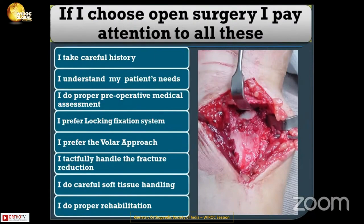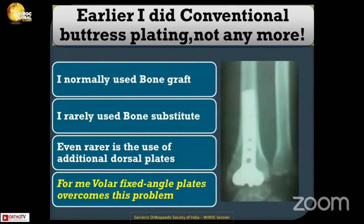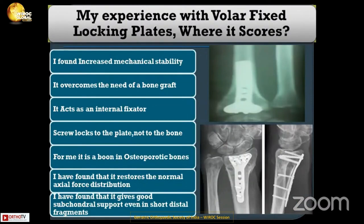When I plan for surgery, I take a careful history, understand my patient's needs, and do proper pre-operative medical assessment. I prefer a locking fixation system because of osteoporosis, and I prefer the volar approach with careful fracture reduction and soft tissue handling, followed by proper rehabilitation. Earlier I used conventional buttress plating, bone graft, and additional dorsal plates — not anymore. All of this is a thing of the past because of volar locking fixed-angle plates, which have overcome all these challenges.